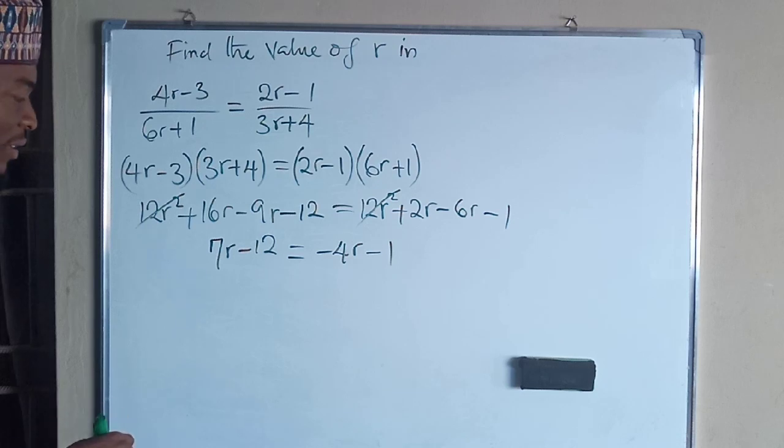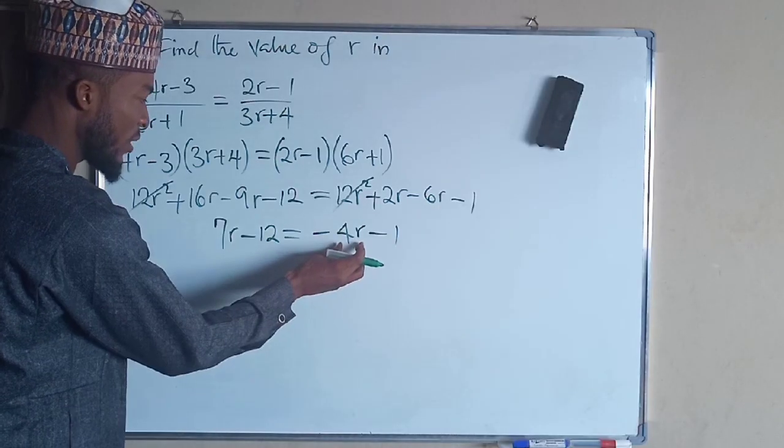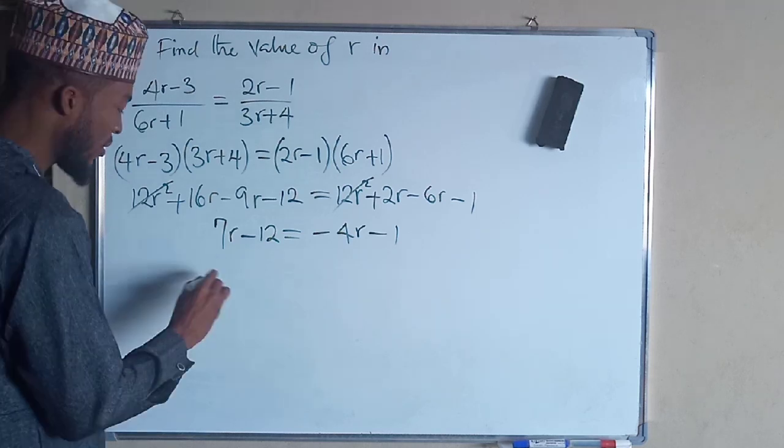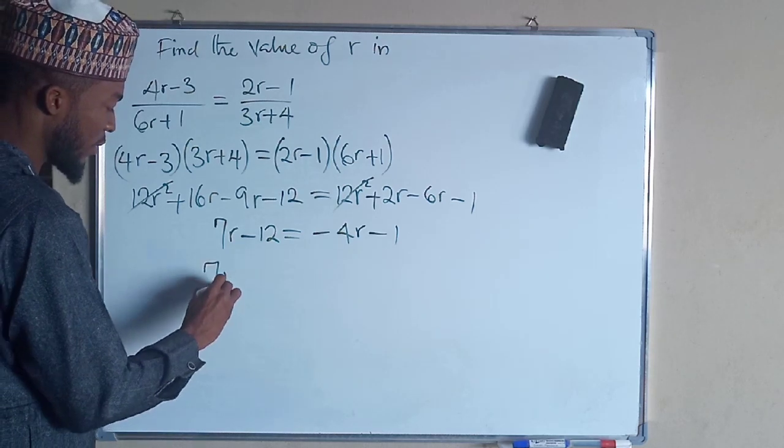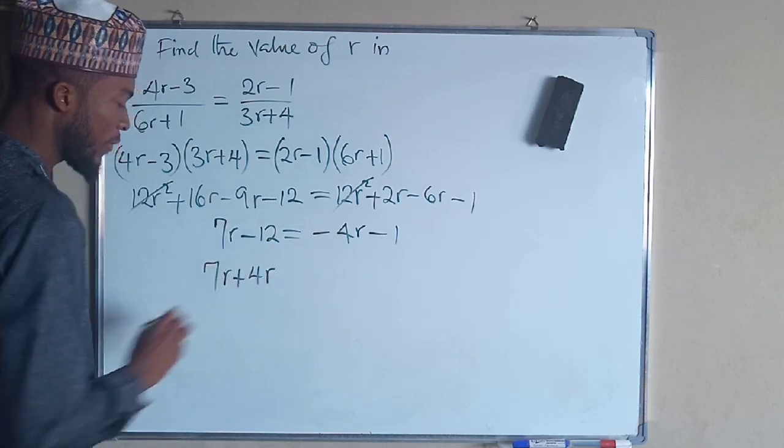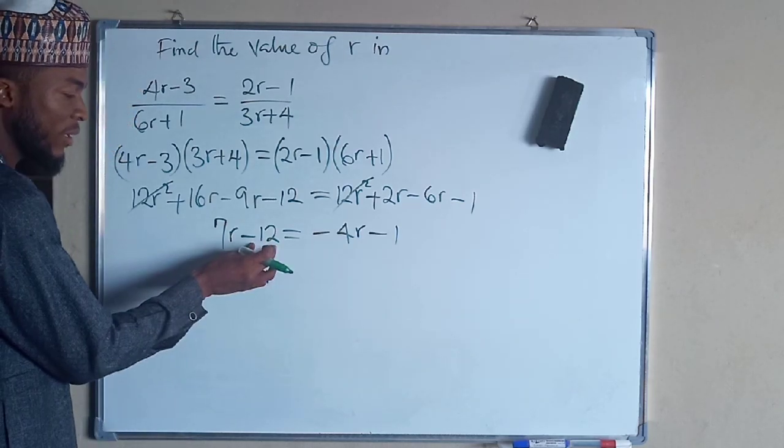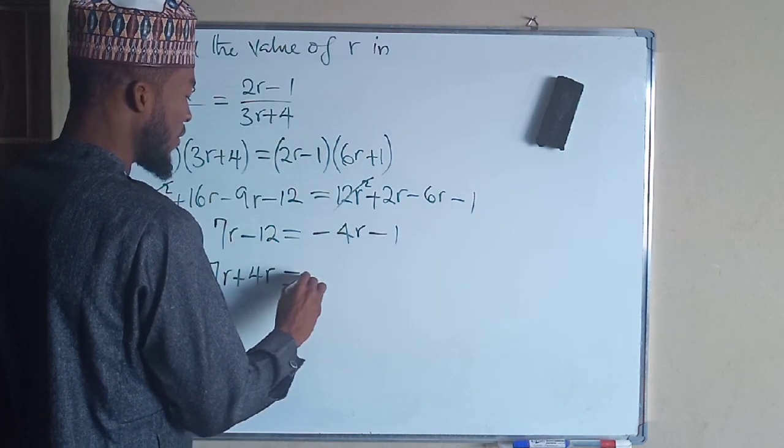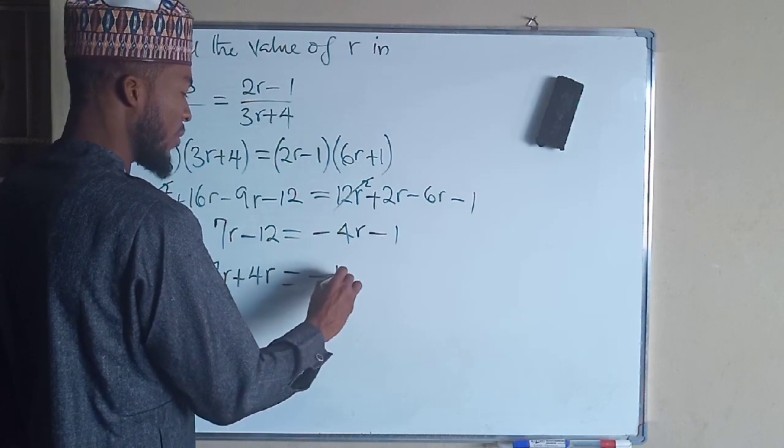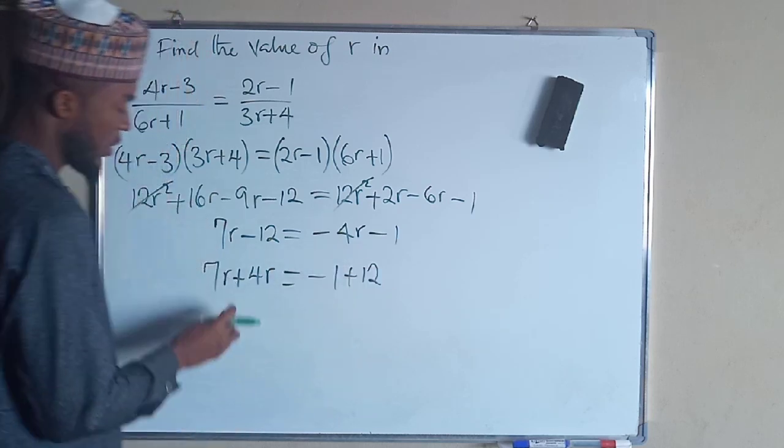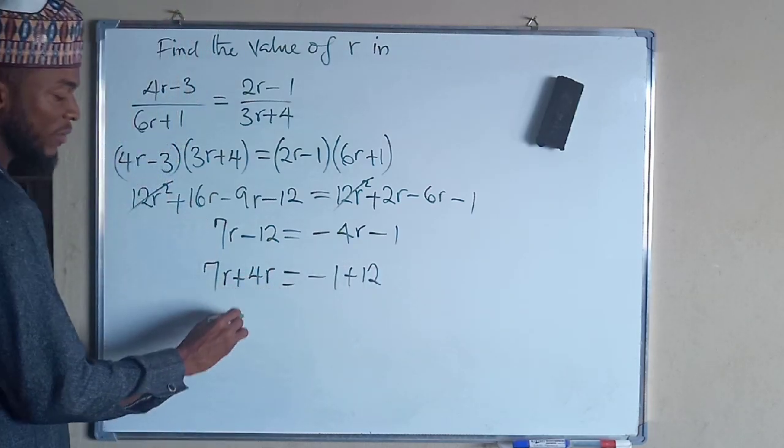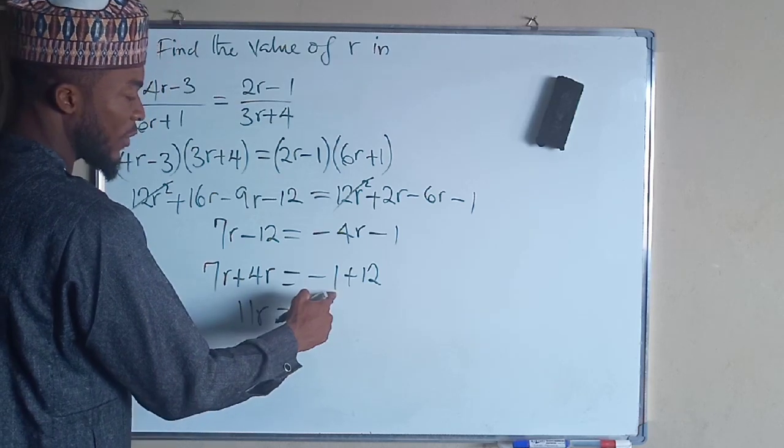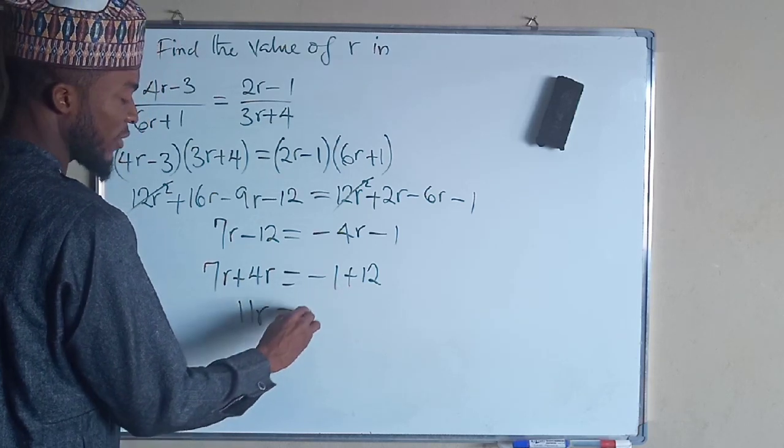Still, we are collecting like terms. If you bring 4R to the left-hand side, it is going to be positive 4R. Then if you take negative 12 to the right-hand side, it is going to give us a positive 12. 7R plus 4R gives us 11R, while negative 1 plus 12 gives us positive 11.